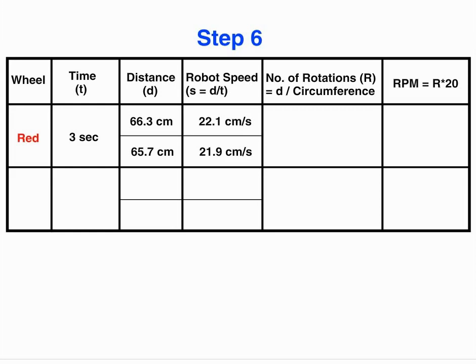To calculate that we will divide the distance by the circumference of the wheel. We have calculated the circumference of red wheel in our last experiment and we know it is 22 centimeters. Therefore in three seconds what we get is three rotations, because the average distance traveled is 66 centimeters divided by the circumference which is 22 centimeters.